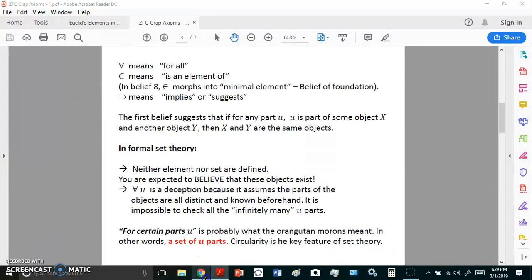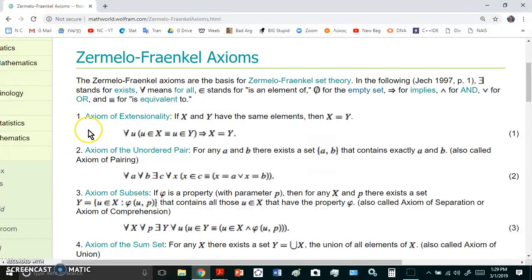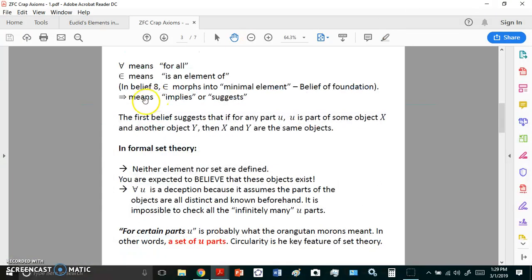If we go to a place like Mathworld, you'll see it has some preliminary definitions and you have to believe in all these things. That upside down A means for all. This funny E here means is an element of and this right arrow here means implies or suggests.